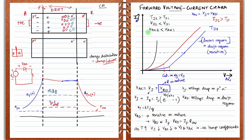I hope you have understood today's video. In the next video, we will go through the turn-on characteristics of the power diode — that is, the transient condition. Today we have drawn the steady-state graph, but next we will see what the turn-on characteristics of the power diode look like.